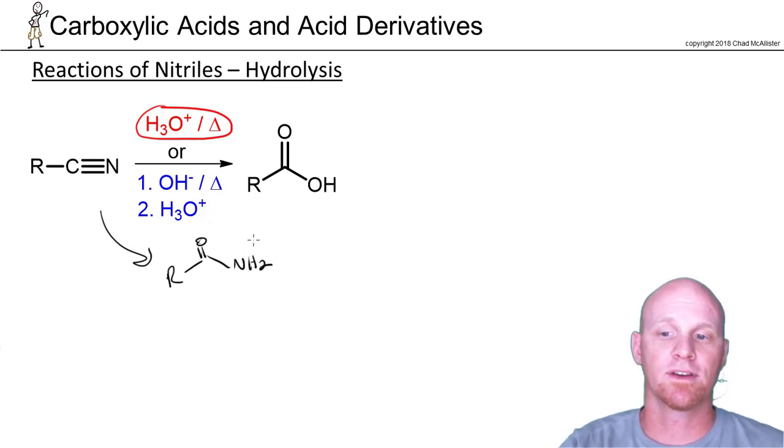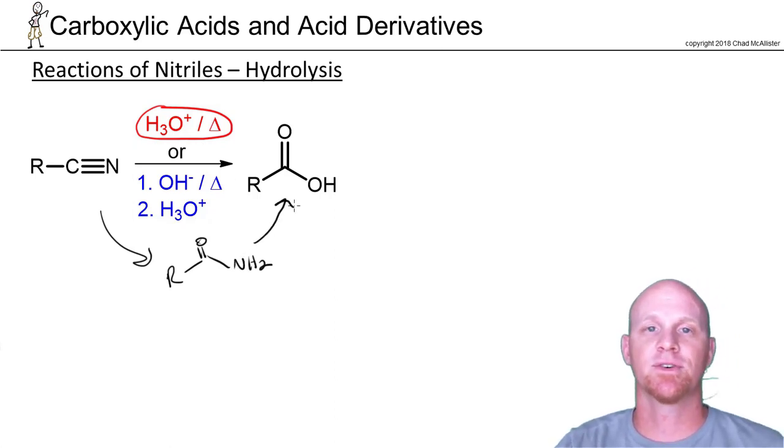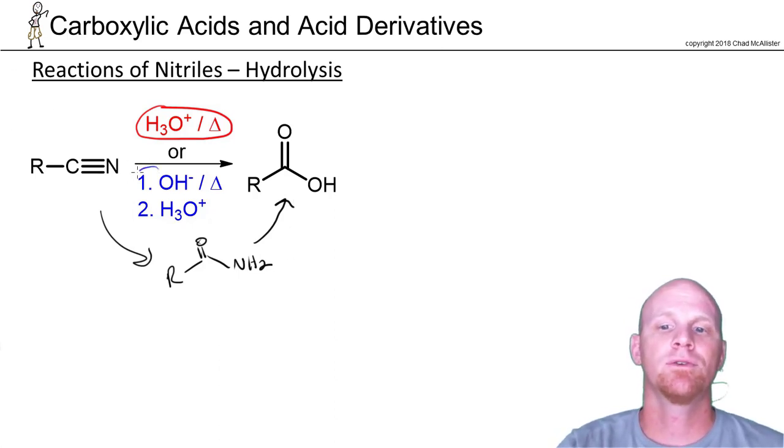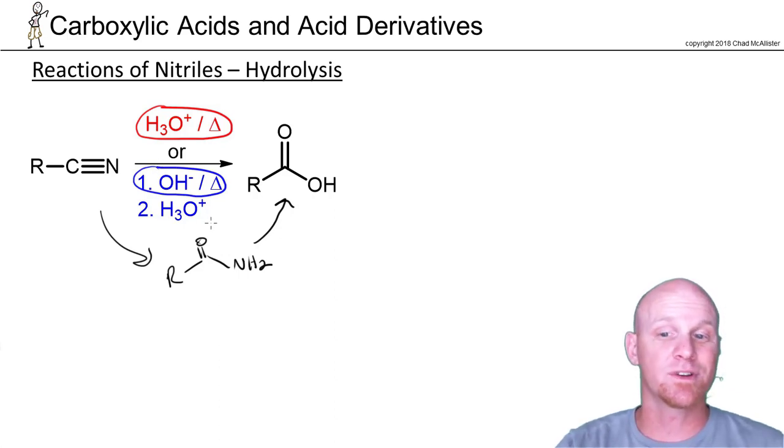Under acidic or basic conditions, it's going to eventually become a carboxylic acid. I focus on acid conditions—that's much more common. If you do this with hydroxide, you'll initially form the carboxylate instead, which is why we simply add H3O+ to protonate it and become the carboxylic acid. It can technically be done with acid or base, but you'll much more commonly see it under acidic conditions.